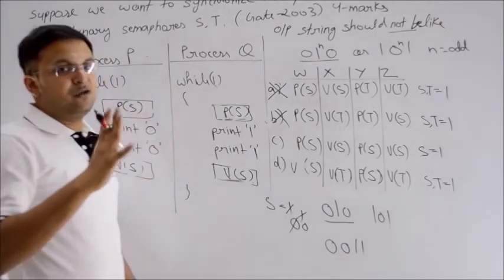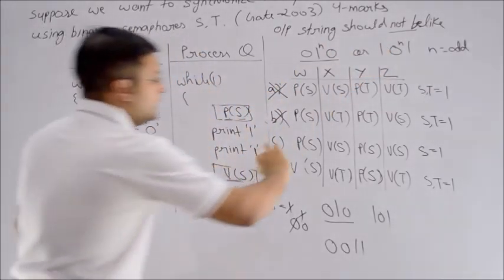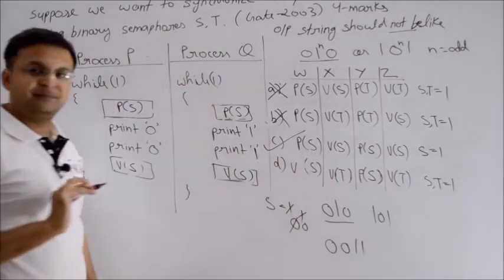Either P will run or Q will run, but whichever runs will completely execute. In no case will you be able to be in the position to generate this odd sequence. This means this is the correct answer. Thank you.